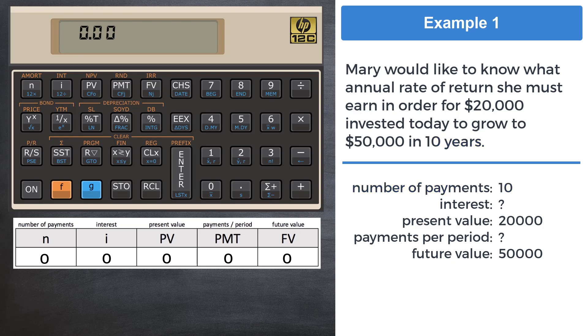It would seem that we are not told the payments per period, not to worry. In this example, Mary is neither adding to her investment nor withdrawing, so as the question reads, the payments per period will be zero, and there we have four of our five TVM variables.